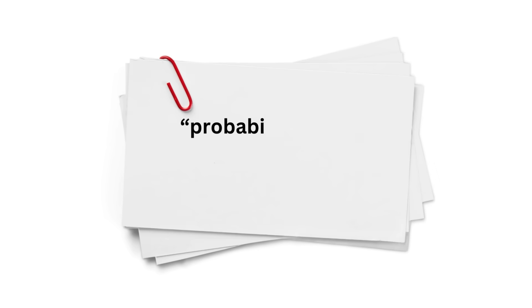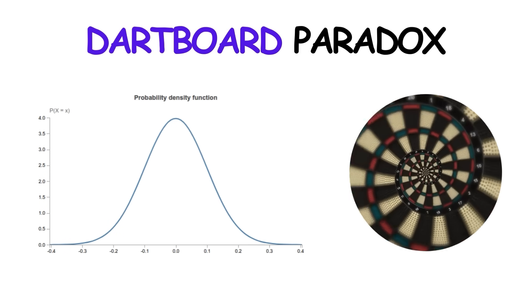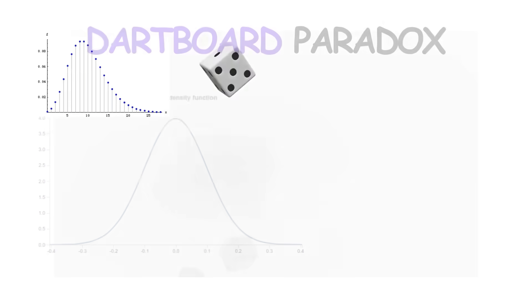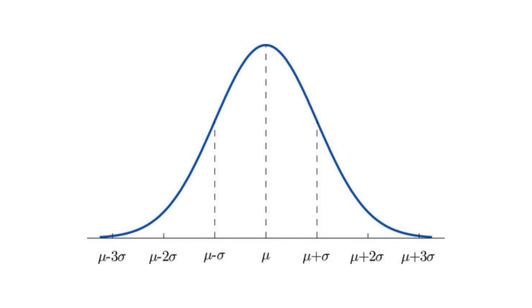The problem is that probability zero does not mean impossible. In this case, what we have is known as a continuous random variable, because the space of possible contact points for the dart is continuous. This is as opposed to a discrete random variable, where there are only a finite number of possible outcomes such as the roll of a dice.